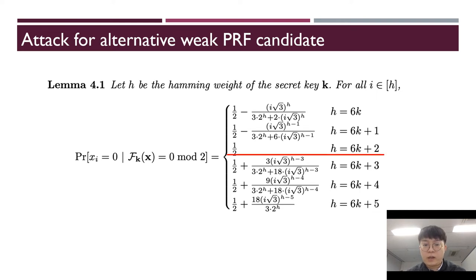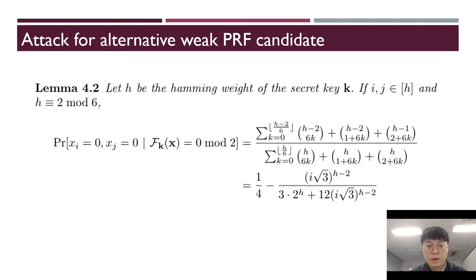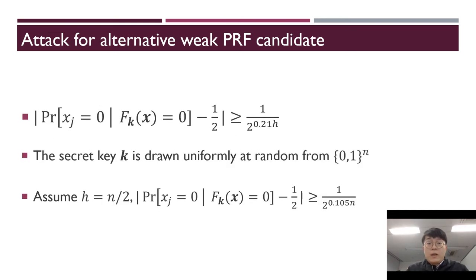Unfortunately, when h is 2 modulo 6, the conditional probability is exactly 1 half. But in this case, if we choose two elements of vector x, then we get a biased conditional probability.